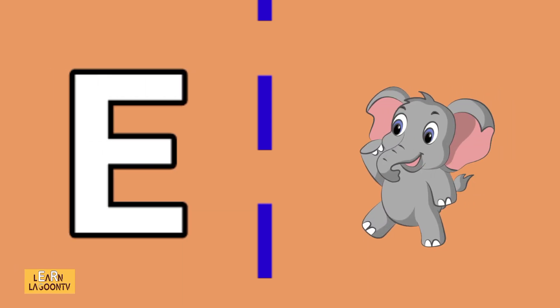E is for elephant, F is for frog, G is for goat.